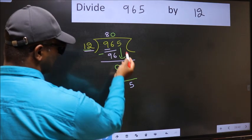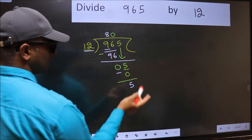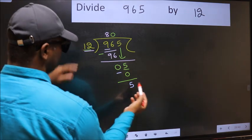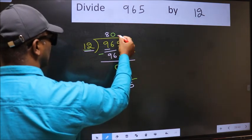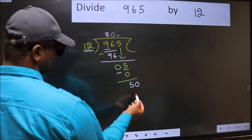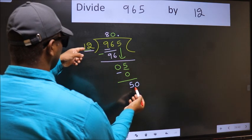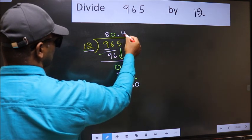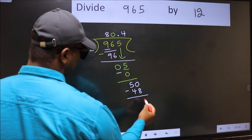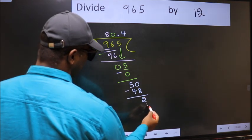Over here, we did not bring any number down, and 5 is smaller than 12. So now you can put a decimal point and take 0. So 50. A number close to 50 in the 12 table is 12×4=48. Now you should subtract. You get 2, and continue the division.